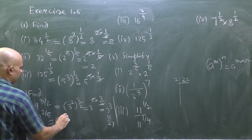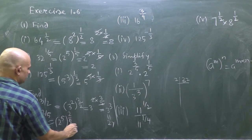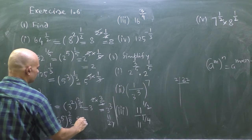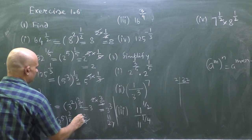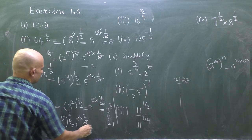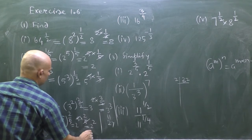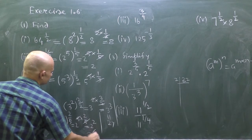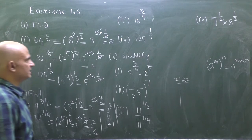Similarly, 32 to the power 2/5: 32 is 2^5, so it is (2^5)^(2/5), which equals 2 to the power 5 × (2/5). The 5s cancel, giving 2 to the power 2, and 2^2 = 4. So the answer is 4.